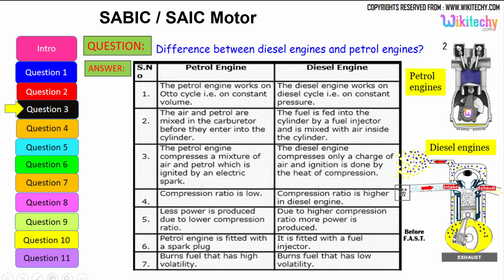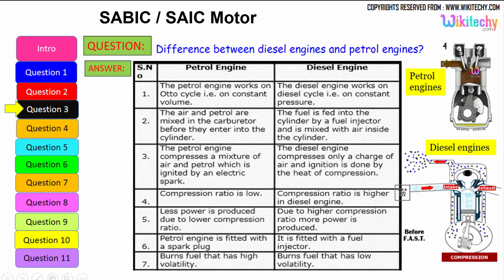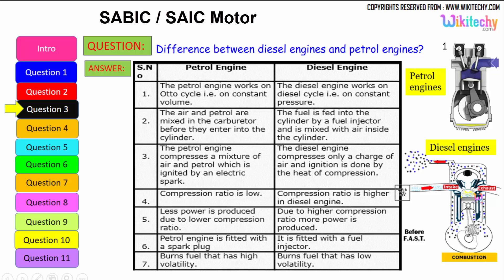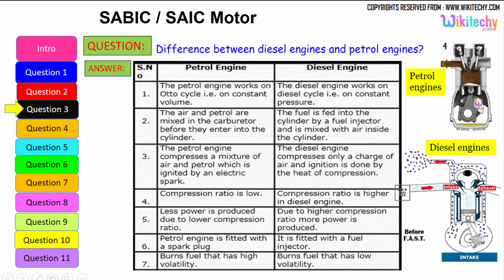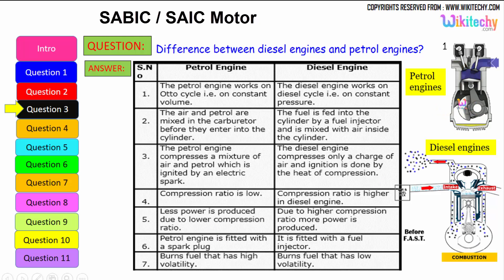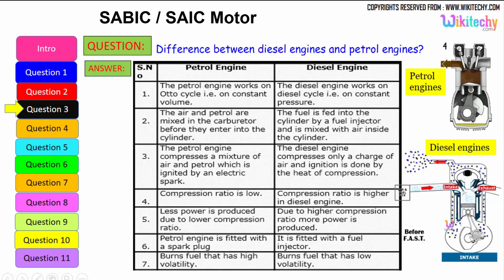The petrol engine compresses a mixture of air and petrol which is ignited by an electrical spark. The diesel engine compresses only a charge of air and ignition is done by the heat of compression. The compression ratio is low in a petrol engine, resulting in less power, whereas the diesel engine has a higher compression ratio, producing more power.